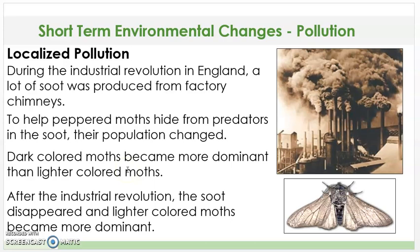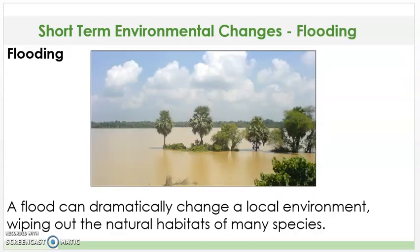The light-colored moths stood out and predators could easily see them. After the Industrial Revolution, the soot disappeared and the lighter-colored moths became more dominant again. The next type of short-term environmental change is flooding. A flood can dramatically change a local environment, wiping out the natural habitats of many species, so either they will adapt to live in a new environment or they will be forced to move to survive.